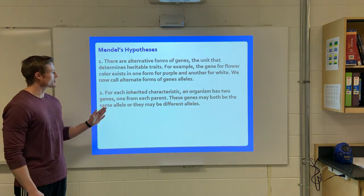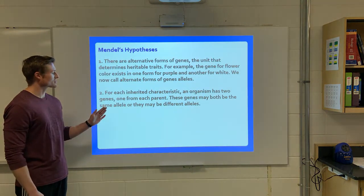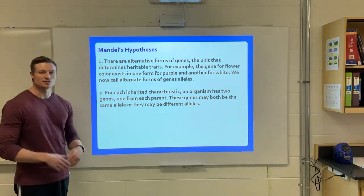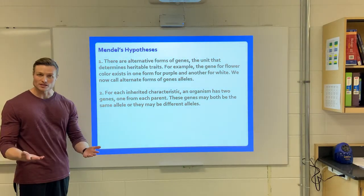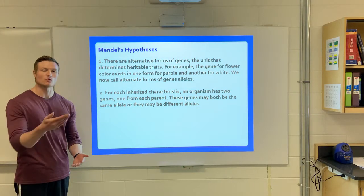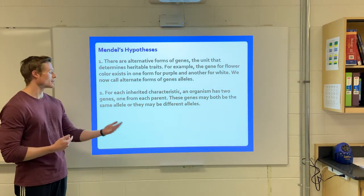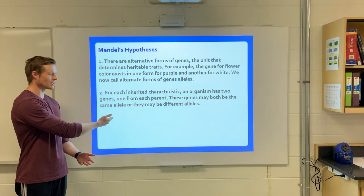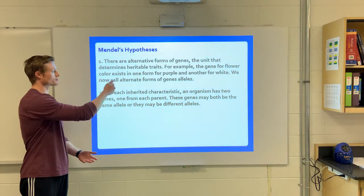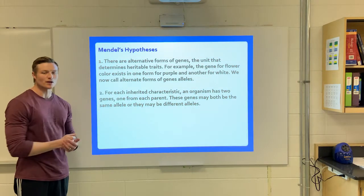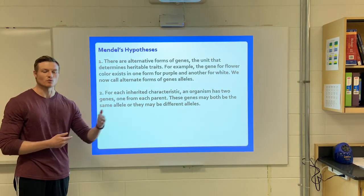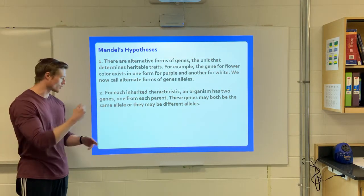For each inherited characteristic, an organism has two genes — one from each parent, one from mom and one from dad. They may be the same, so purple-purple or white-white, or they might be different: one purple and one white.